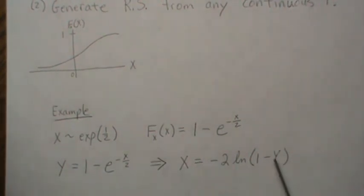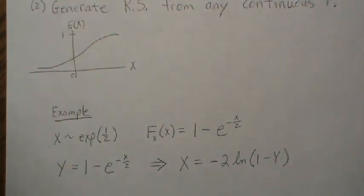This is how many computers generate random numbers for distributions - they're very good at generating 0-1 uniform distributions and then they back solve it for the desired population.